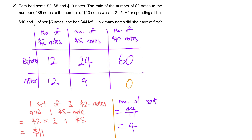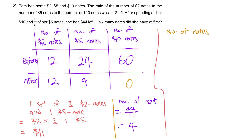We've now solved everything. Let's double-check: 12 $2-notes is $24, and 4 $5-notes is $20 — $24 plus $20 equals $44. Confirmed. Hence, the total number of notes at first is 12 + 24 + 60 = 96.